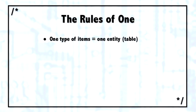To look at normalization from a positive standpoint rather than a negative way, it's best summarized as the rules of one. Let me explain. If you take one type of items or one group of things, they should all be together inside of one table.